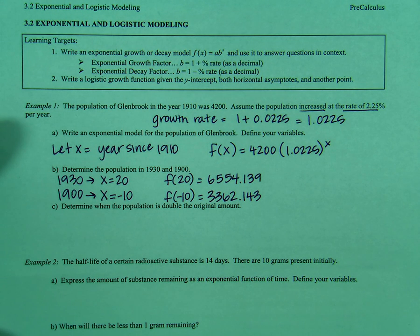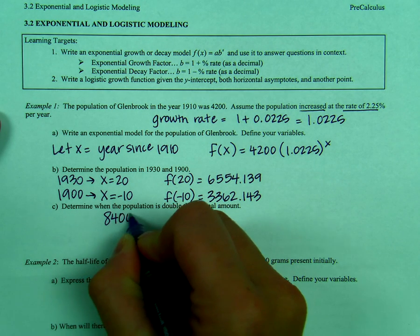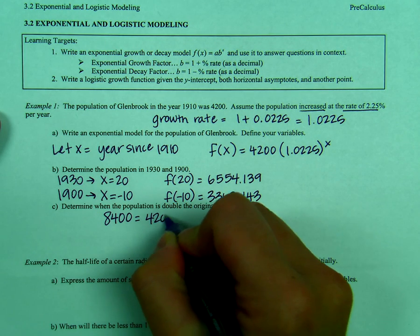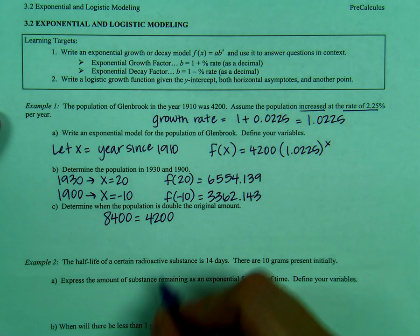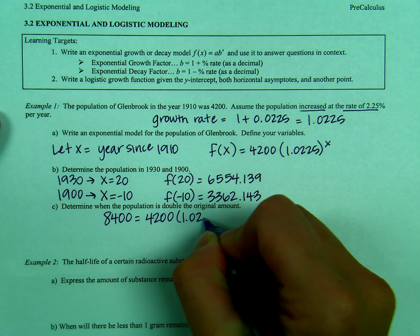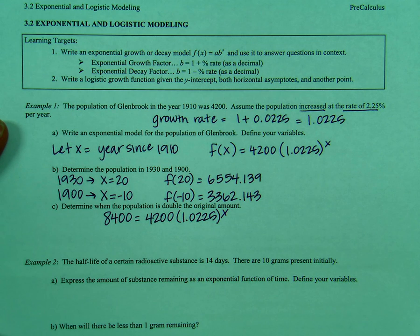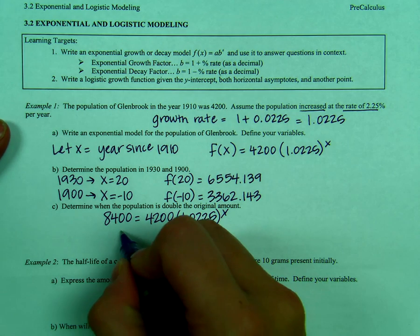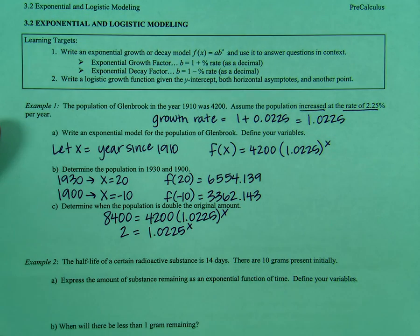Now, in c, you are asked to determine when the population is doubling the original amount. So the original amount was 4,200. So twice 4,200 would be 8,400. So we want to know when our population will be that much. So we're going to take 8,400 equals 4,200 times our growth rate, 1.0225 to the x power. And we're going to use this equation to solve for x. So we'll start by dividing by 4,200. So 2 is equal to 1.0225 to the x power.